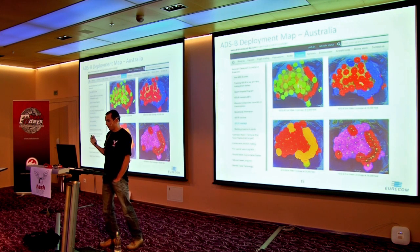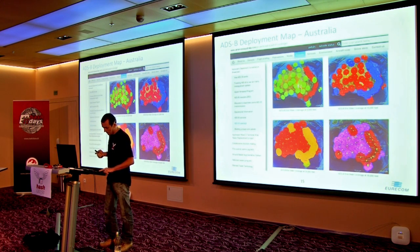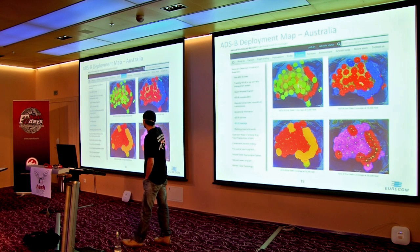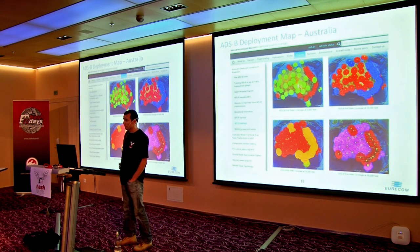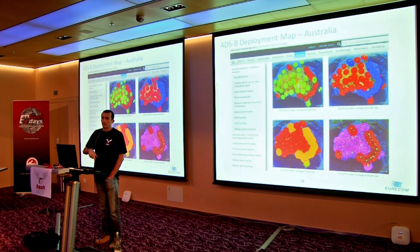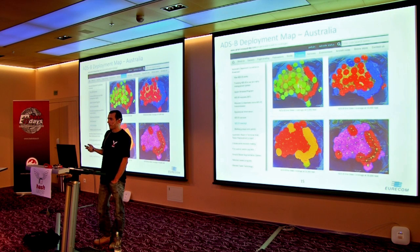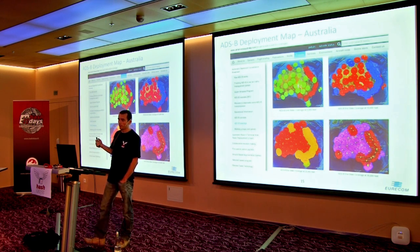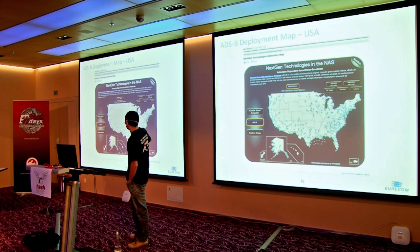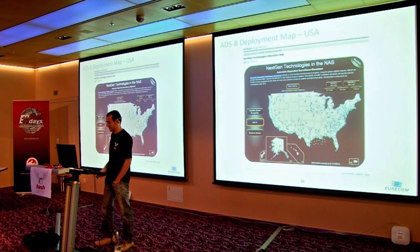Looking at how much progress has been made in ADS-B deployment: Australia is basically almost 100% — by mid-2013 it will be full coverage, so any flight over Australia is tracked and most aircraft flying there are required to have this technology. In the USA there's a different pattern — it mainly covers busy ports. And then there's the rest of the world.